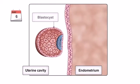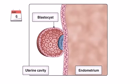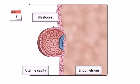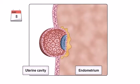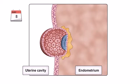Implantation of the blastocyst usually occurs 6 to 8 days after fertilization. By the end of day 8, the blastocyst has burrowed into the endometrium of the uterus.